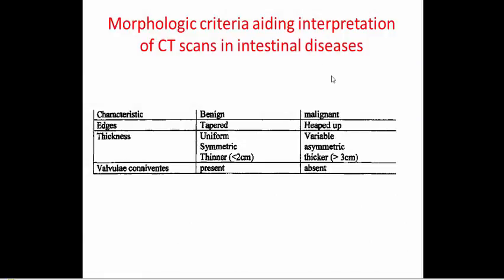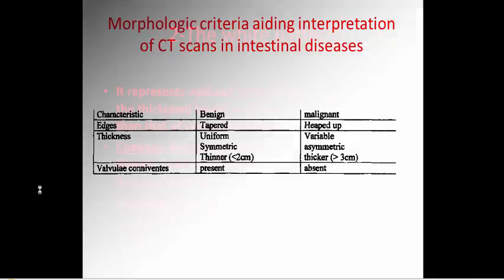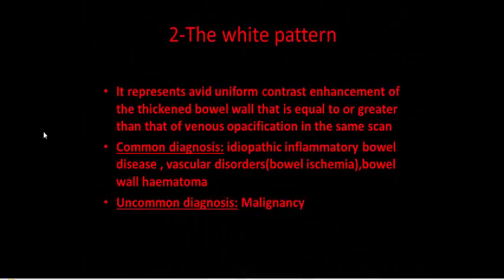Morphologic criteria aid interpretation of CT scans in bowel disease. Characteristics distinguishing benign from malignant include: edges — benign shows tapering, malignant shows shouldering; thickness — uniform, symmetric, less than two centimeters in benign; variable, asymmetric, thicker than three centimeters in malignant; and valvular folds — present in benign, absent in malignant.